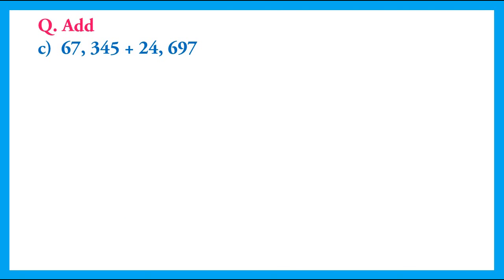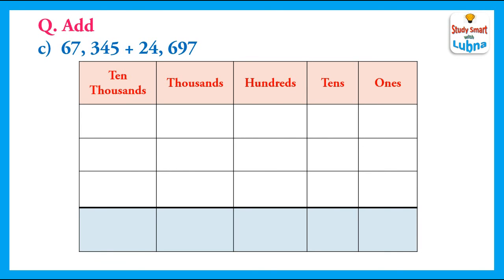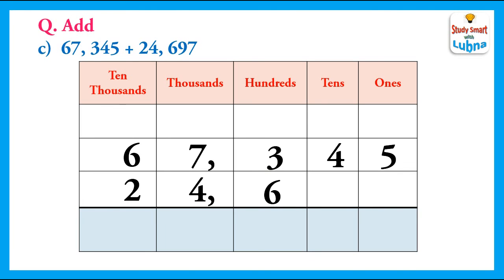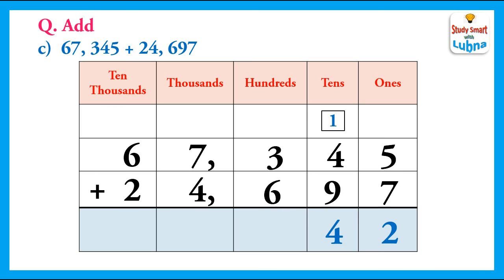Next question: we have to add sixty-seven thousand three hundred and forty-five and twenty-four thousand six hundred and ninety-seven. We write them below their place values and put the addition symbol. We start adding from the ones: five plus seven equals twelve, so we regroup — write two in the ones column and put one carry on the tens column. After this, we add the tens: one plus four plus five plus nine equals fourteen. We regroup the tens, write four in the tens column, and put one carry on the hundreds column.